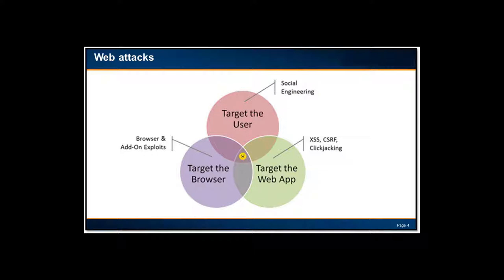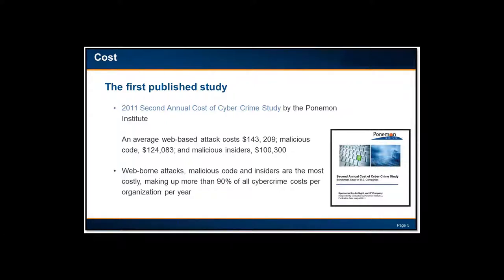Hackers try to leverage the user alongside the web application or browser, meaning the user is also part of the attack. They social engineer the user to do things they normally would not do — click on a link, a Word document, an Excel spreadsheet, or a PowerPoint presentation. The newest exploit injects a DLL into Internet Explorer and takes over the user's computer. When it comes to the cost of such cybercrime, the first published study came from the Ponemon Institute. The second annual cost, published in 2011, showed these attacks carry a heavy cost of around $140,000 — just for remediation of the technical component.